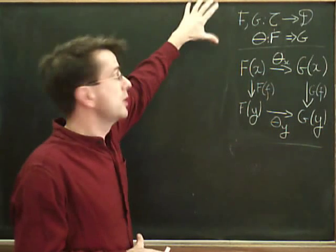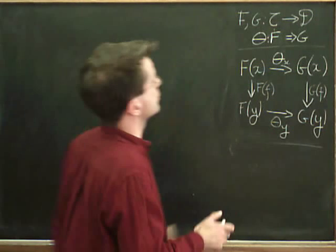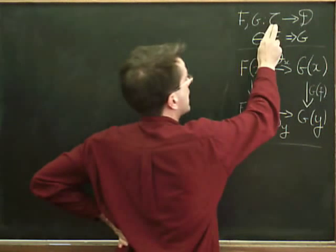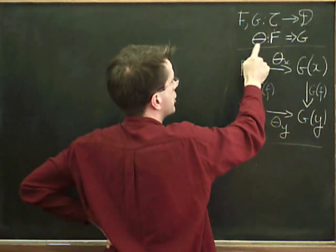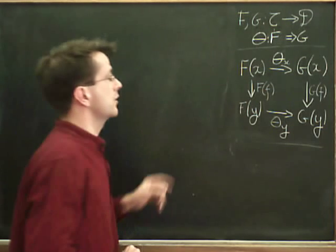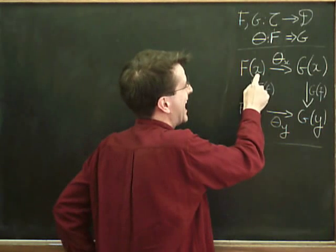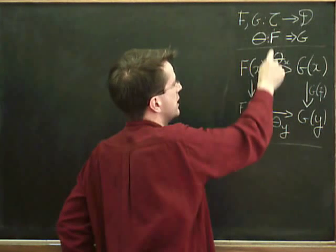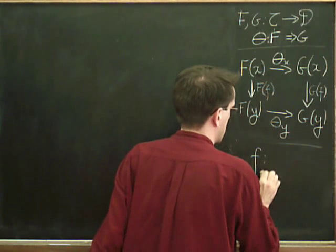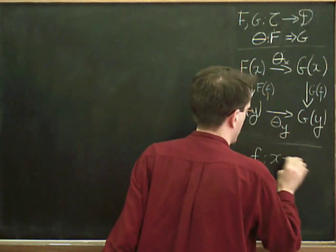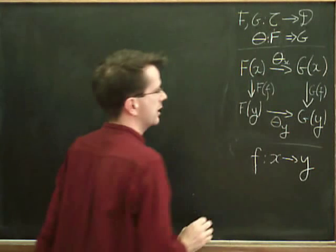So let me just remind you what natural transformation is in the usual setting. So we have categories C and D and functors F and G from C to D. And a natural transformation from F to G consists of the data of each object X in the category C. I want a morphism from F of X to G of X. So that whenever I've got a morphism F from X to Y,